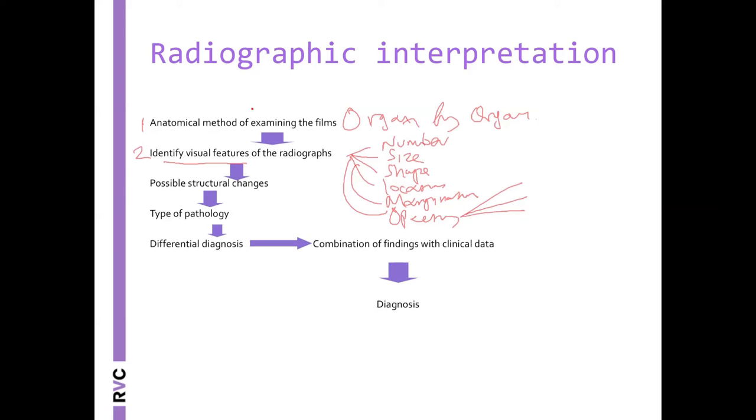And as we said, when you go to radiopacity, make sure you be specific. What radiopacity? From most lucent: gas, fat, soft tissue, bone, and mineral.